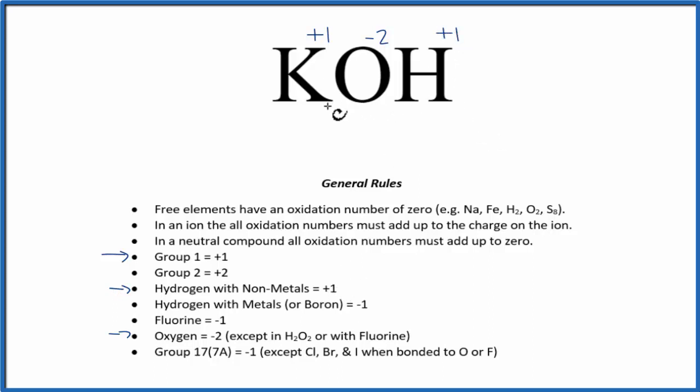So those are the oxidation numbers for each element in KOH. This is a neutral compound overall - there's no plus or minus charge written. In a neutral compound, all the oxidation numbers add up to zero.